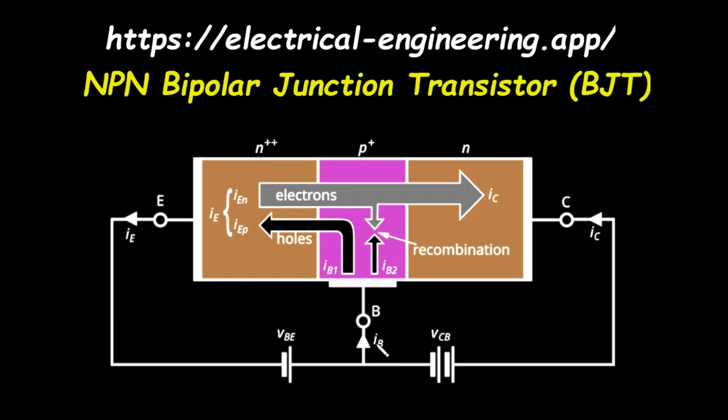First, and most importantly, a massive number of electrons are injected from the heavily doped emitter into the base. This flow of electrons is represented by the current I_En. Second, a much smaller number of holes are injected from the base into the emitter. This flow of holes is represented by the current I_Ep.